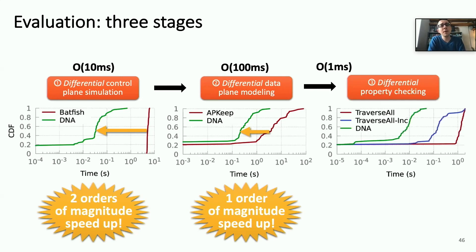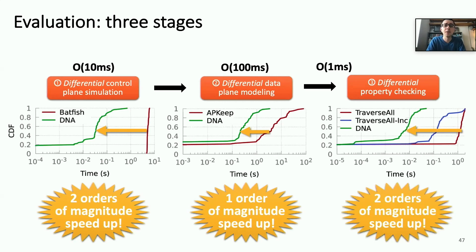And lastly, for our differential property checking, we compare against approaches where we consider all equivalence classes or a subset equivalence classes, but all entry points into the network. And we see that DNA's efficient traversal of the forwarding graphs gives us two orders of magnitude speed up, approximately, and gets our differential property checking down to the order of milliseconds.